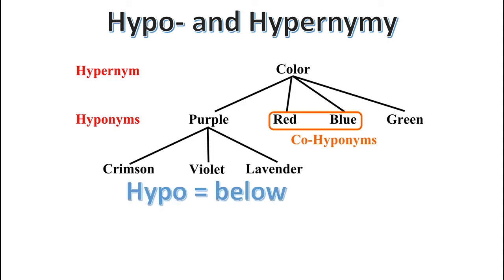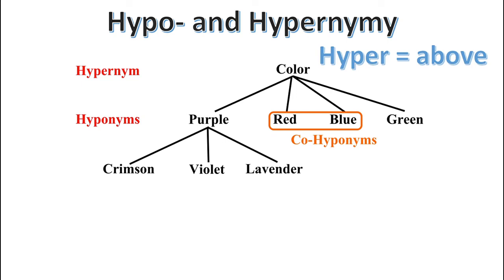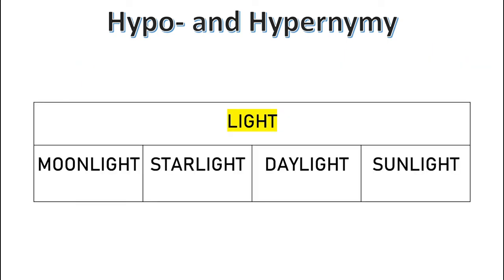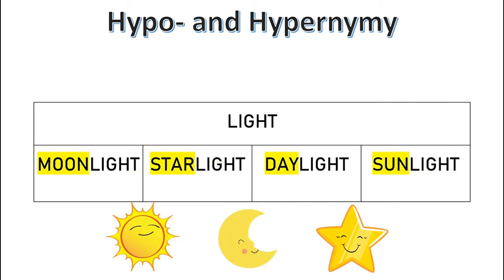Hypo means below — as in hypothermia, below a safe temperature, or hypodermic, below the skin — and nym is a Greek word meaning name. So a hyponym is a 'below word,' referring to a hierarchy in which more general terms appear higher up and more specific ones appear lower down. So the compounds moonlight, starlight, daylight, and sunlight are all hyponyms of the word light — each denoting a specific kind of light. The opposite of hypo is hyper, meaning above, so the hypernym of these compounds would be light. In endocentric compounds, the head determines a broader semantic category such as light, and the modifier provides more specific information — whether it comes from the sun, moon, or stars.